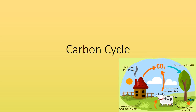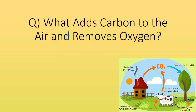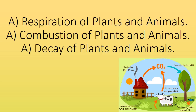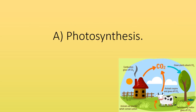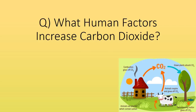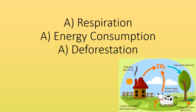Carbon cycle. What adds carbon to the air and removes oxygen? Respiration of plants and animals, combustion of plants and animals, and decay of plants and animals. What adds oxygen to the air and removes carbon? Photosynthesis. What human factors increase carbon dioxide? Respiration, energy consumption and deforestation.